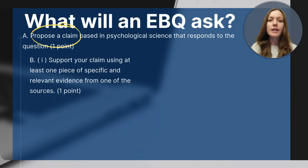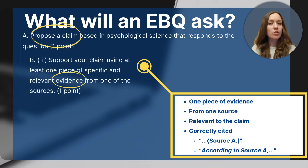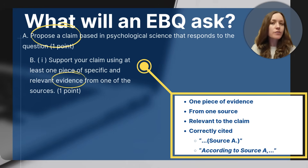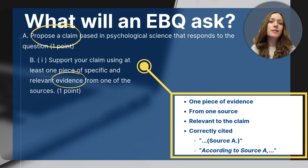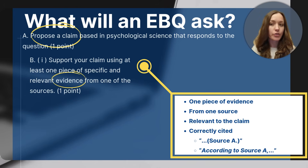Your claim will be worth one point. The next part is Part B, which has two requirements. The first says: support your claim using at least one piece of specific and relevant evidence from one of the sources. You're going to need to pull out a specific piece of evidence from one of the sources that supports your claim, and it's important that it's correctly cited — meaning you need to tell which source your evidence came from. You have two ways to do that: parenthetical citations or in-text citations. For example, you could say '80% of female participants saw improvement using the medication for two weeks' and follow that with the source name in parentheses, like Source A.